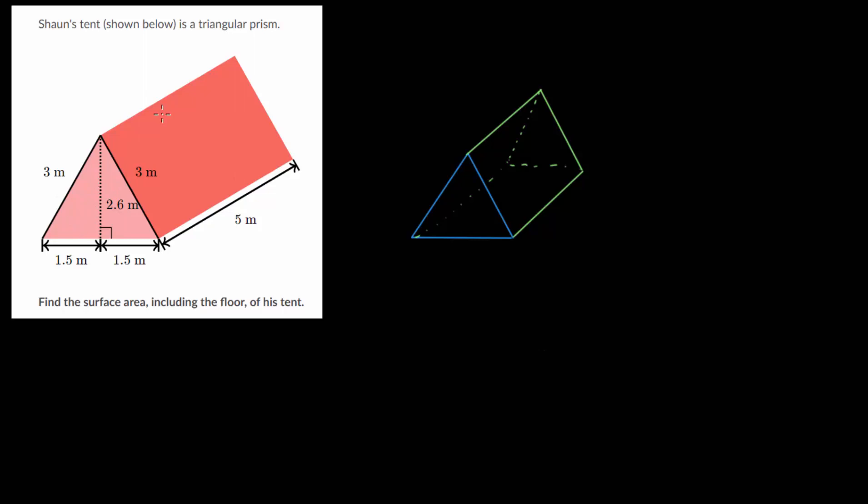You can find the area of the front and then just double that, because it's the same as the area of the back. And then you can just find the area of these three rectangles on the side.